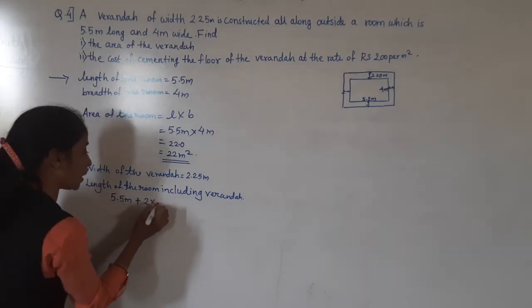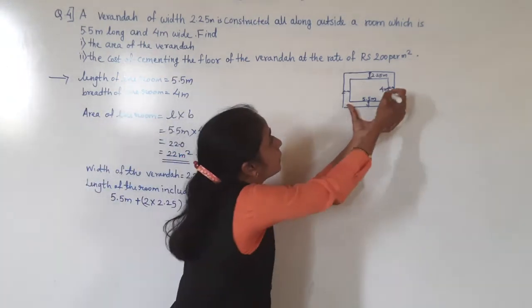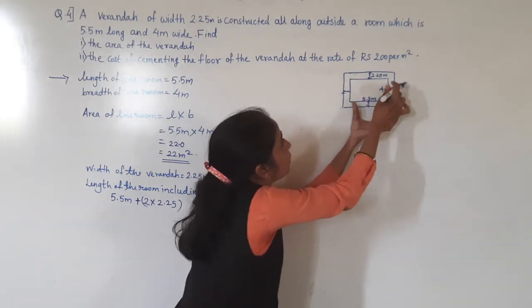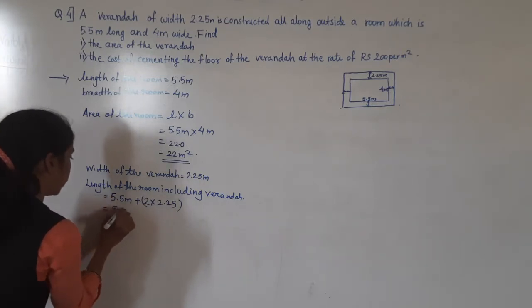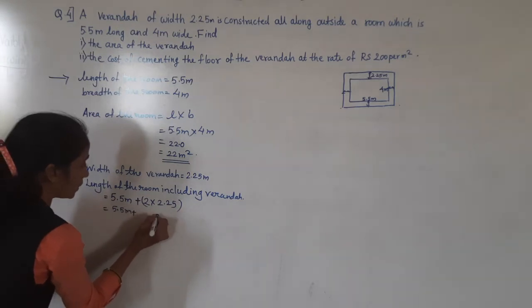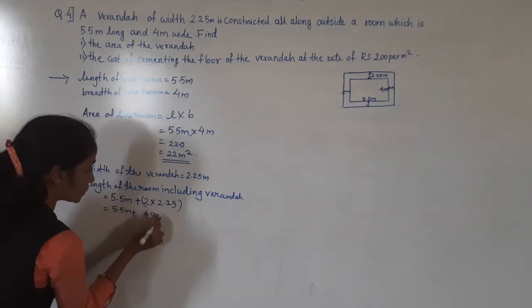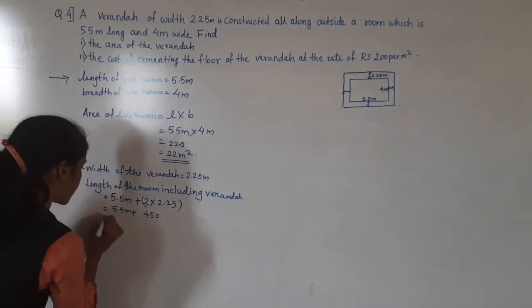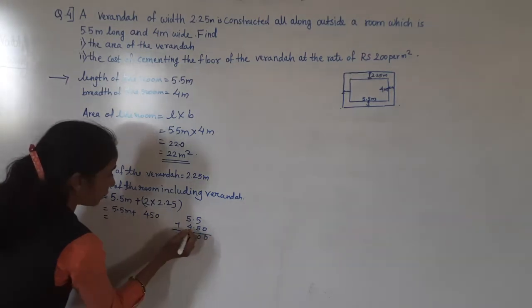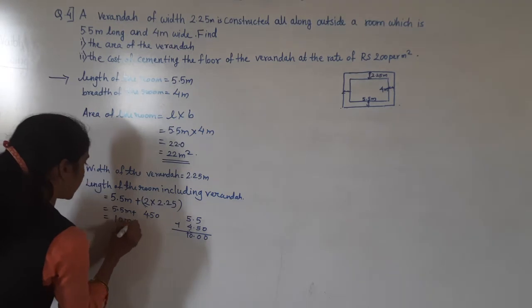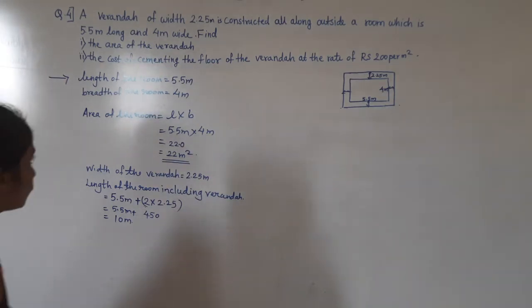From both sides we add 2.25. So 2 times 2.25 equals 4.50. Adding: 5.5 plus 4.50 — add these: 9 and 1 equals 10. So what we got? 10 meters. Length of the room including veranda is 10 meters.